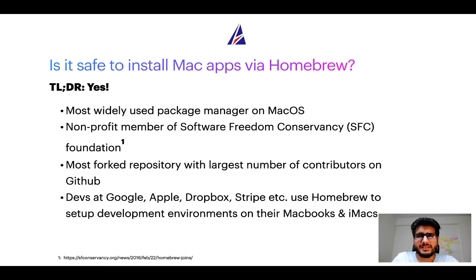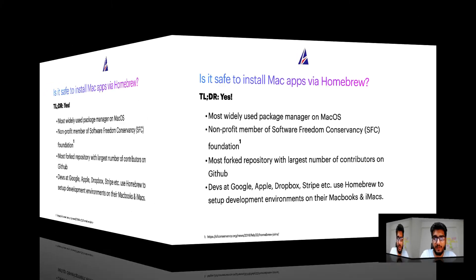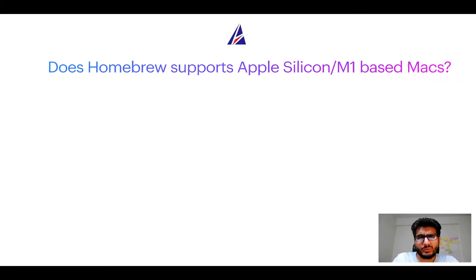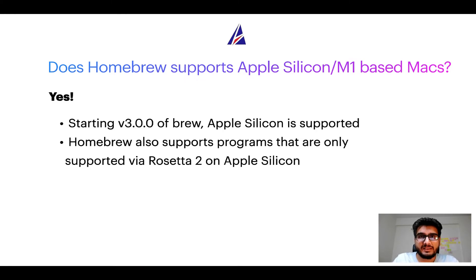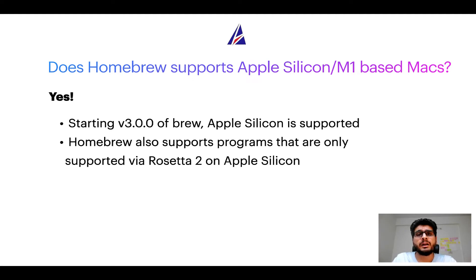Many developers at organizations like Google, Apple, Dropbox, and Stripe use Homebrew to set up different development environments on their MacBooks and iMacs. Can you use Homebrew to install programs on Apple Silicon, more popularly known as M1 MacBooks? Again, yes. Starting with version 3.0 of brew, Apple Silicon is now supported. In fact, Homebrew also supports programs that are currently only supported via Rosetta 2 on Apple Silicon.